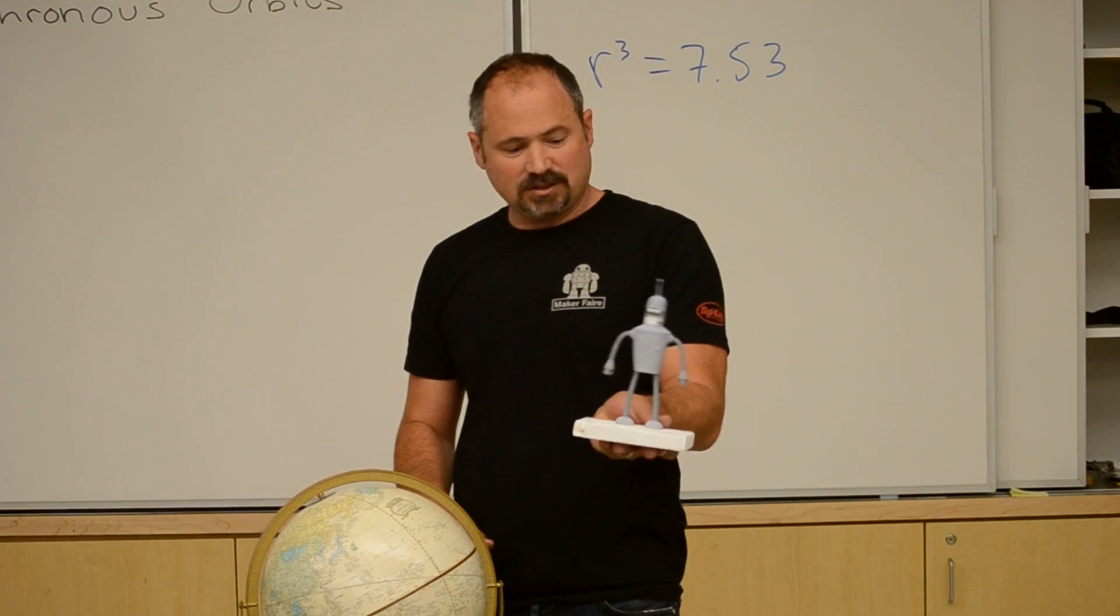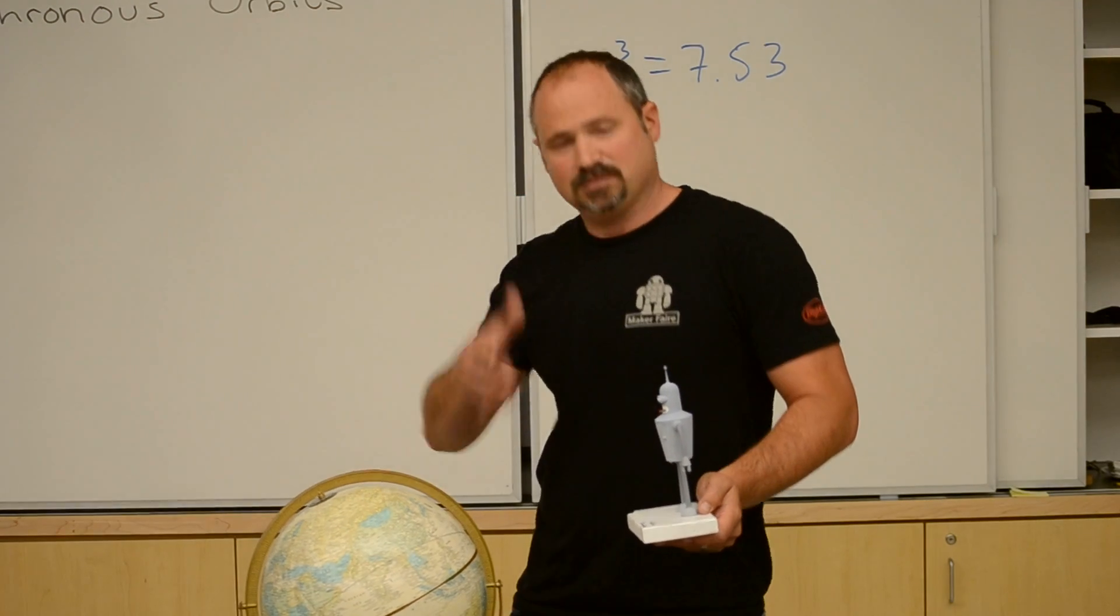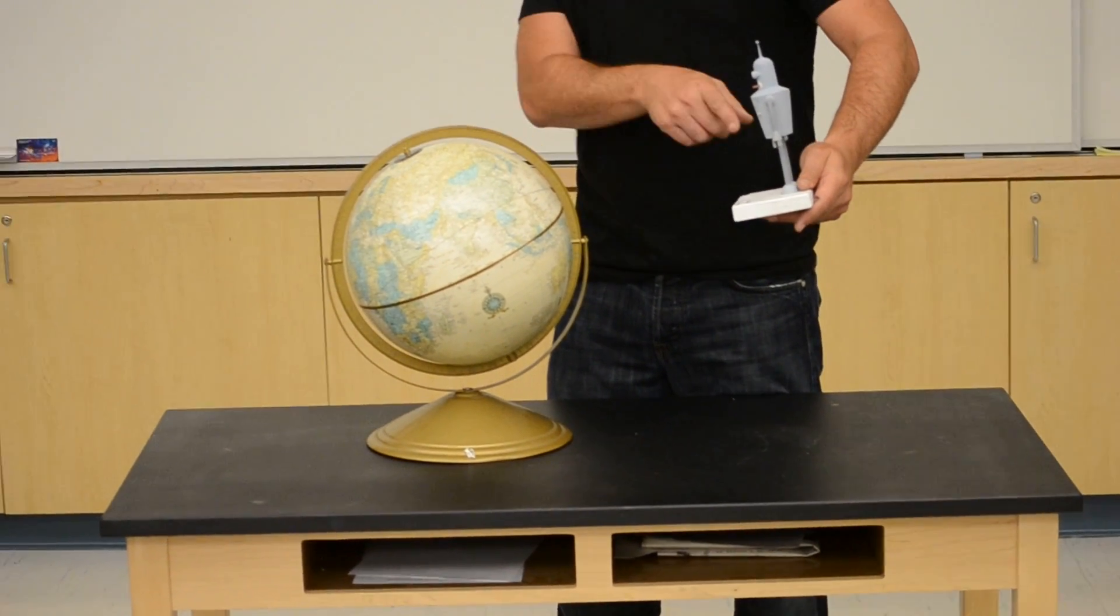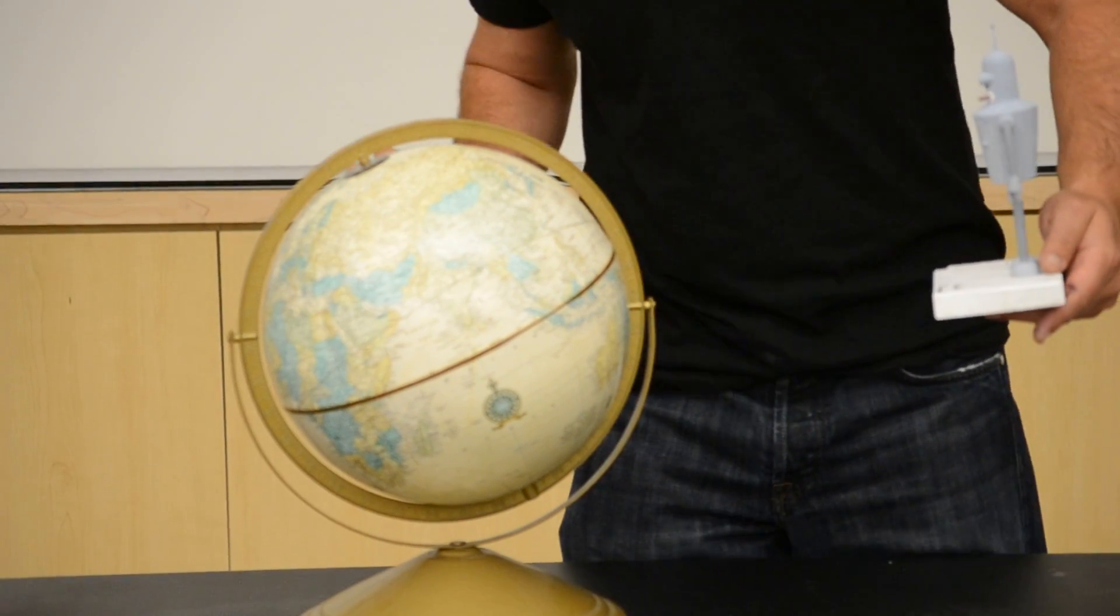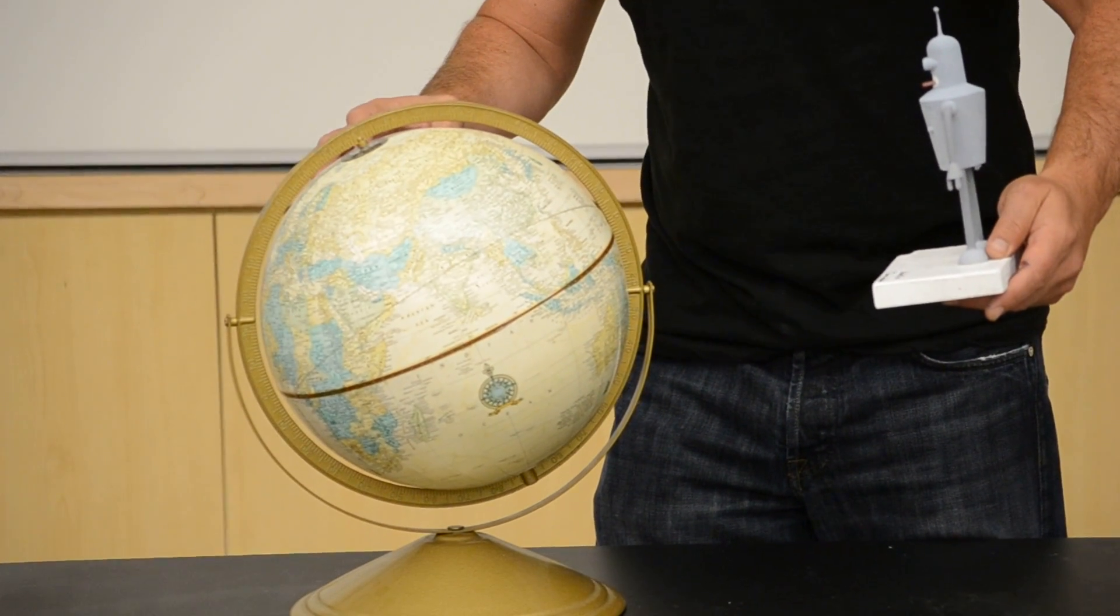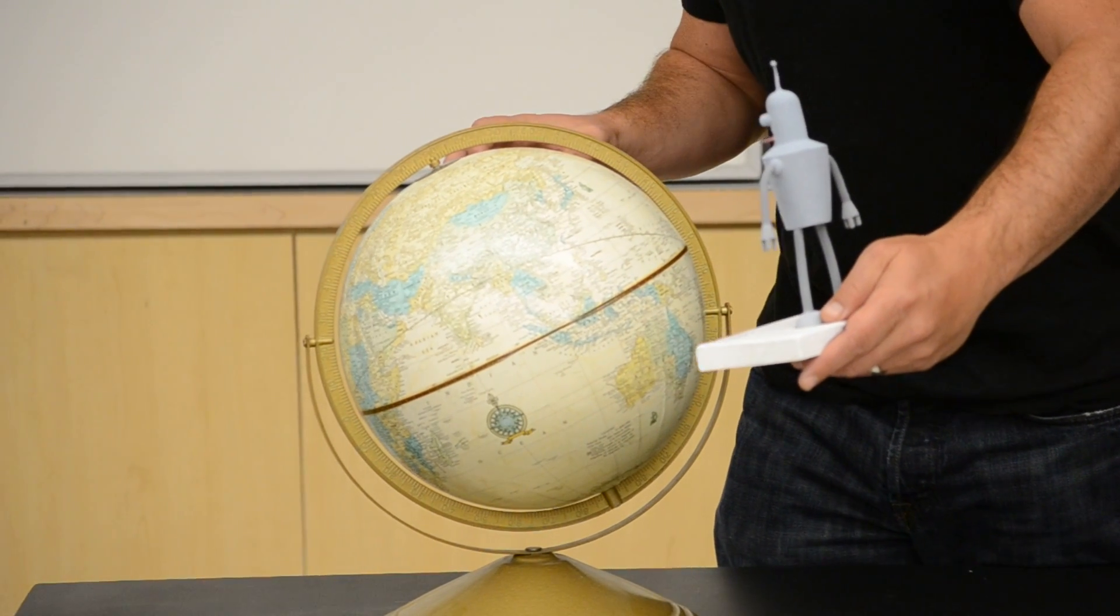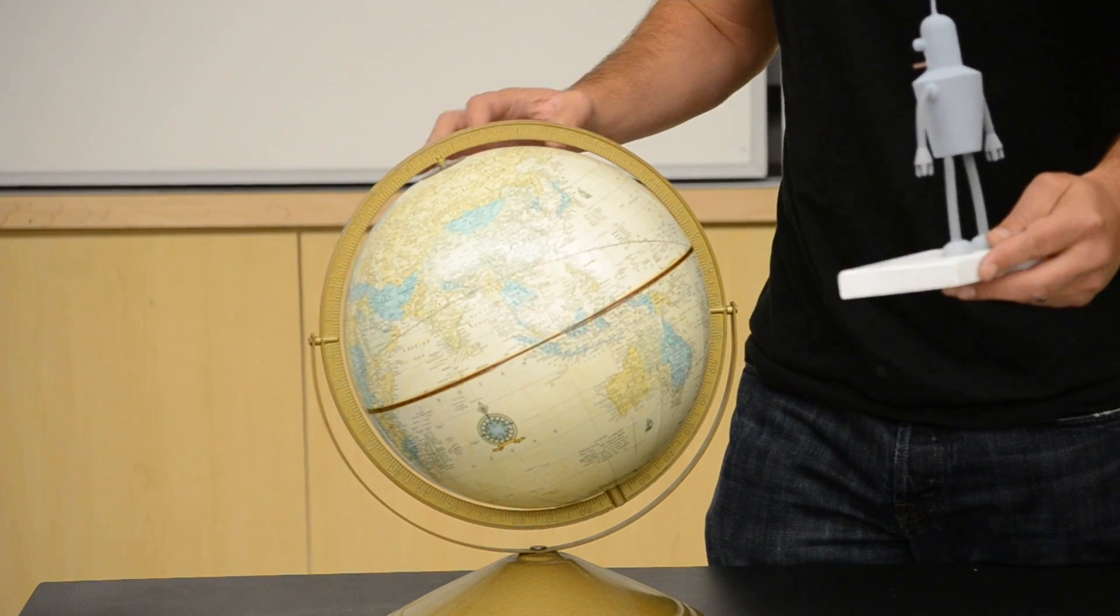So in this case our satellite is Bender. And let's say for example Japan wants some satellite TV. So they put up Bender to emanate these signals for the children to enjoy their cartoons. And as the Earth rotates, Bender is orbiting at the same rate. And that's because Bender is in a geosynchronous orbit.